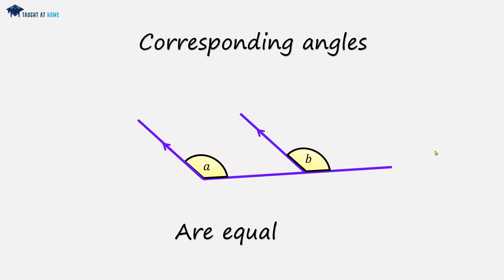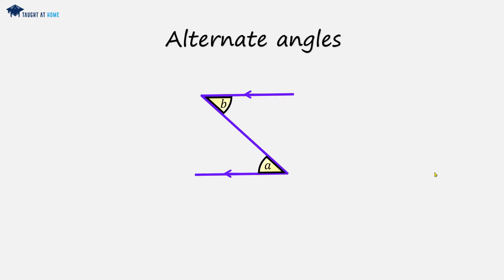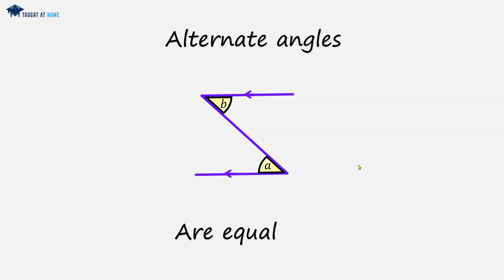Finally, we have alternate angles — you might call these Z-shape angles because we have a Z-shape. We've got two parallel lines and a diagonal line that joins them, and the alternate angles here will be a and b, and these are — you guessed it — they are equal.